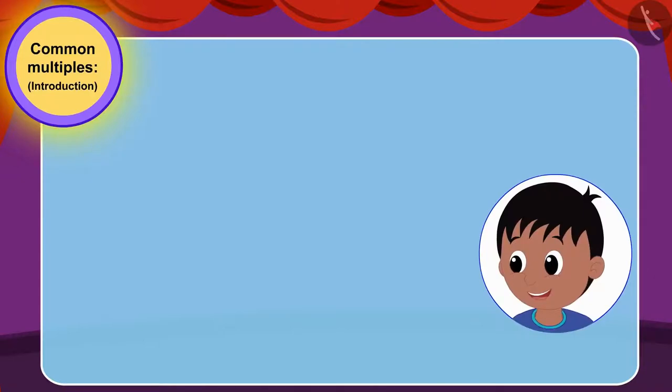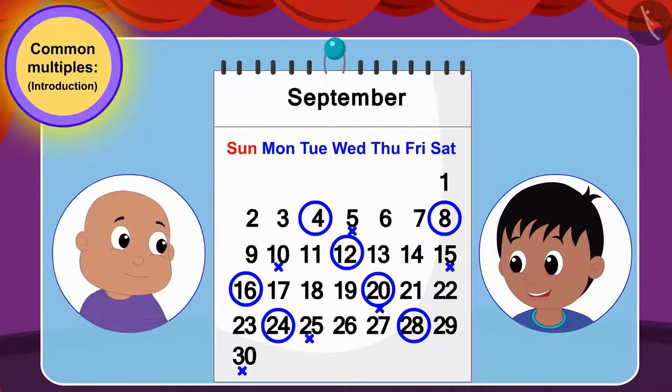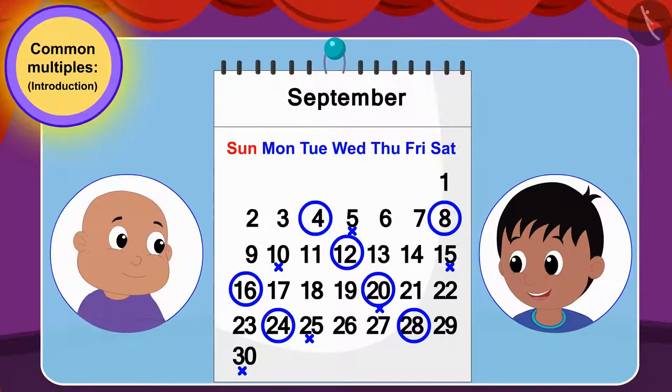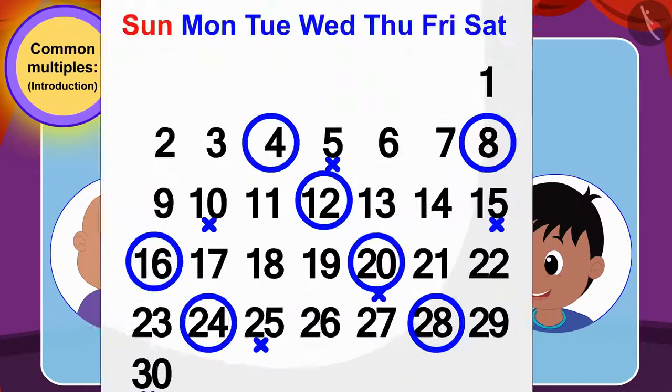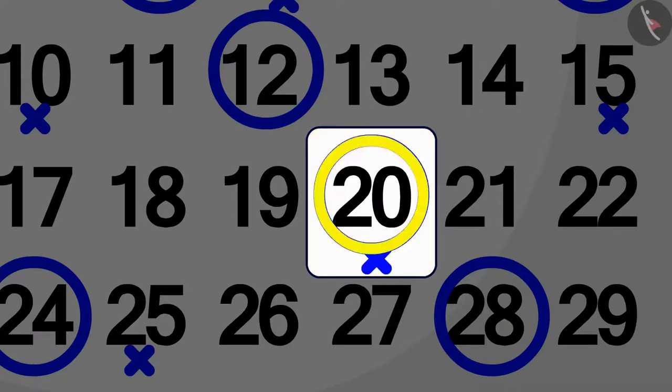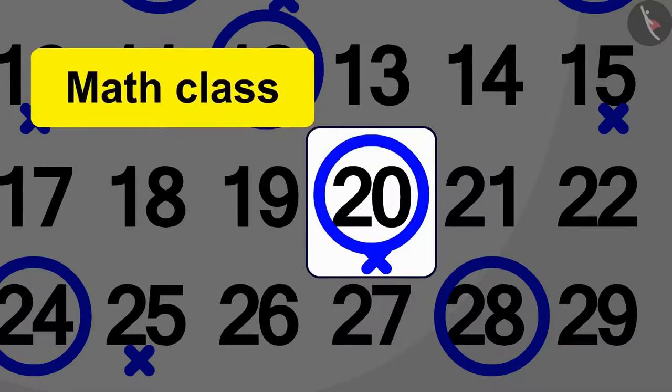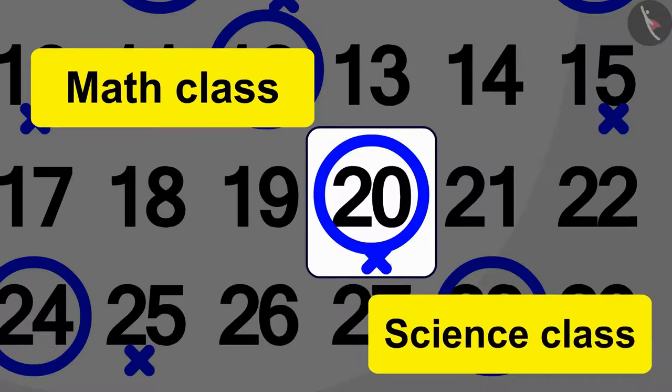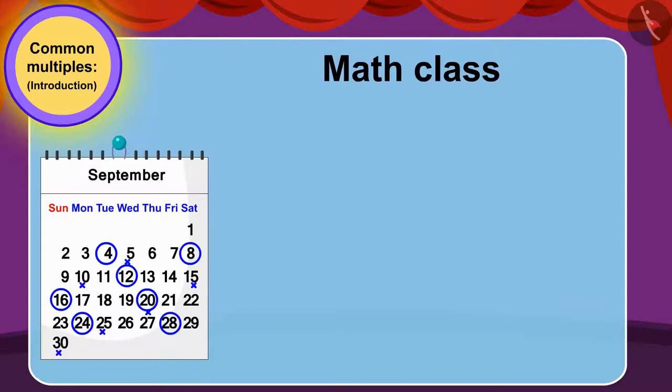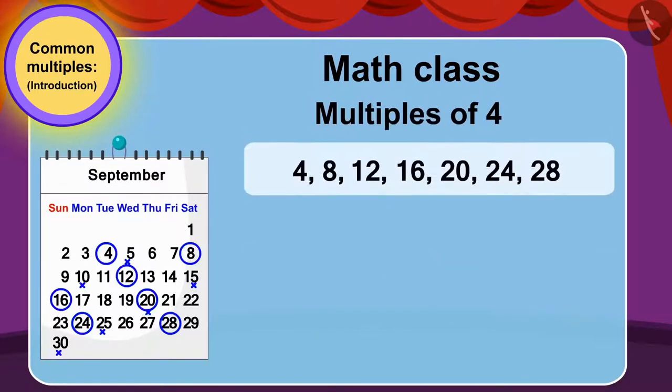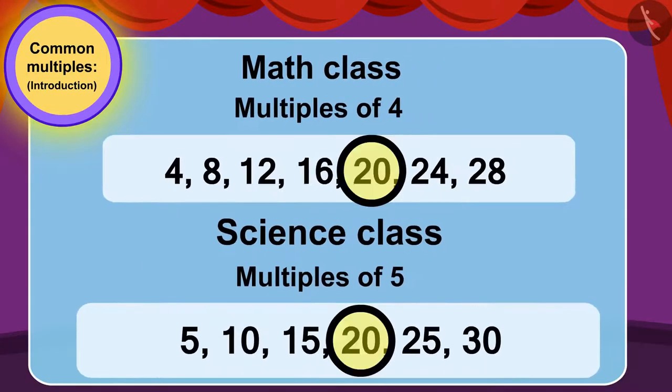Raju excitedly made a mark on the calendar on the dates on which Bablu will go to science class. Now, when Raju and Bablu looked closely at the calendar, they found that on the twentieth, Bablu made the circle of math class and Raju also made mark for science class. Children, we can see that Bablu's math class dates are multiples of four and his science class dates are multiples of five and twenty is a multiple of both numbers.